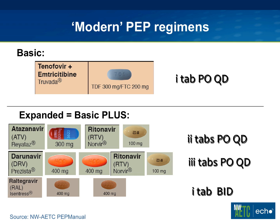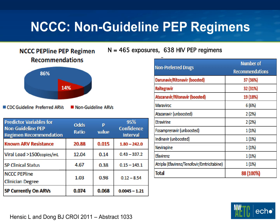Here's what I would consider more modern PEP regimens. This is not really in the guidelines because the guidelines are older, but it is in the AETC document I mentioned at the beginning. We use tenofovir/emtricitabine as the basic regimen — two active agents, just one tablet daily. Then if we're going to add a third agent, we typically add atazanavir and ritonavir, bringing you to three tablets once a day. We sometimes use darunavir and ritonavir, which would be four tablets total once a day. Raltegravir is a newer agent that has also been looked at more and more with PEP, though it introduces a twice-a-day dosing issue.